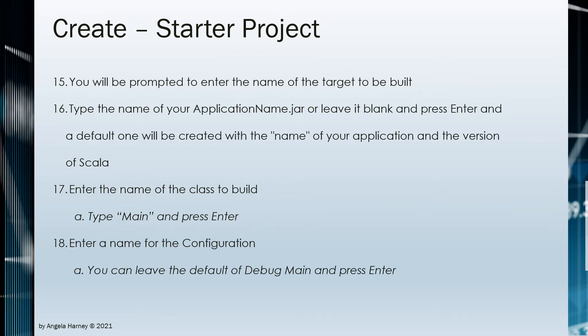When you run the build for the first time, a build.sbt file will be created. You will want to make sure the version of Scala in this file is correct, as well as check that the project name is what you expect. After making changes to this file and saving it, you will be prompted to import changes. If you are not prompted to import changes or import build, you will want to check the status bar at the bottom for any issues.